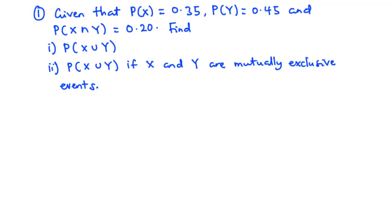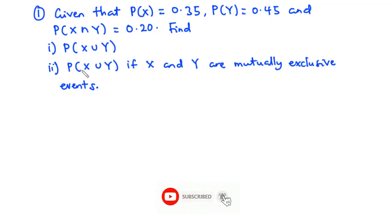For example one: given that P(X) = 0.35, P(Y) = 0.45, and P(X∩Y) = 0.20, find (i) the probability of X∪Y, and (ii) the probability of X∪Y if X and Y are mutually exclusive events.